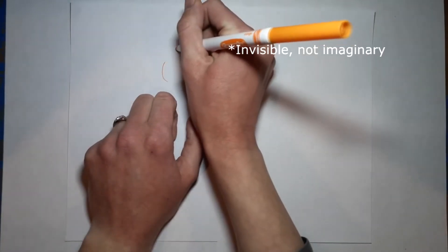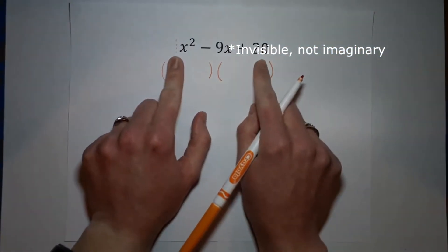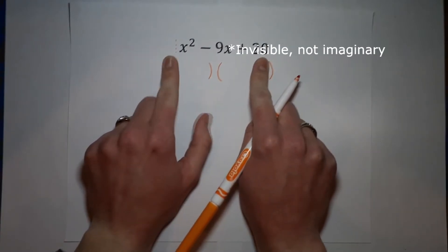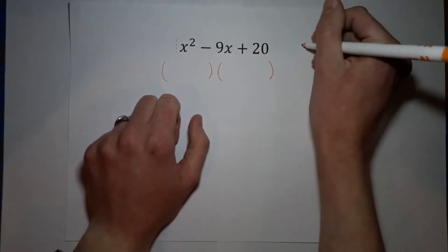You take this number and you multiply it by the number in front of the x squared. In this case, there's an imaginary one there, right? We just usually don't write it because we don't have to. So we've got 20 times one, which just gives me 20.